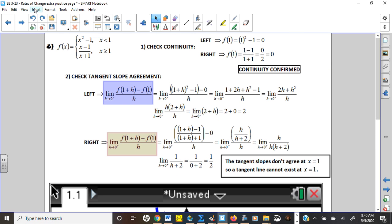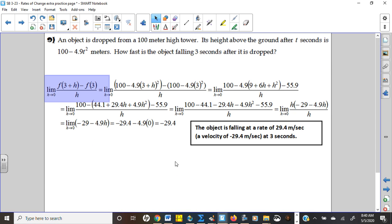Problem 9 was just an application problem. Drop an object from 100 meters up and it's going down at 4.9 meters per second. So you start at your height, 100 minus 4.9 T squared. That's your equation. Three seconds after it's dropped is where we're checking. So basically what that means, I'm going to take that 3 and I'm going to plug that in for the T. I'm going to plug that in for the T. And then you just do it like you would do the normal problems.